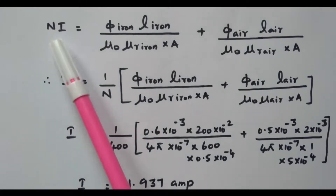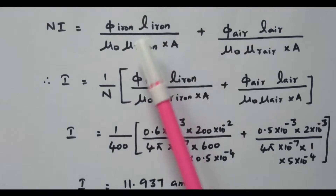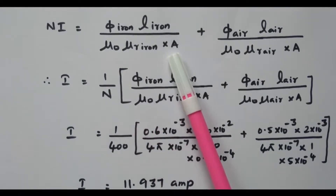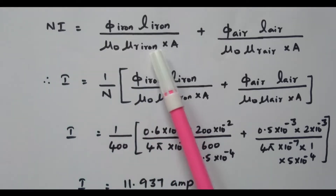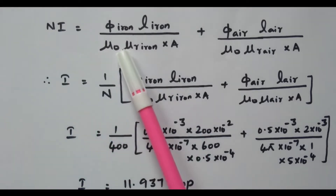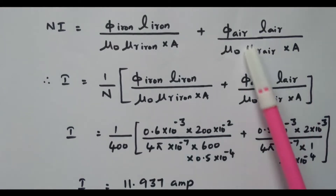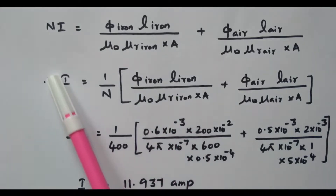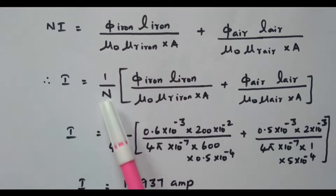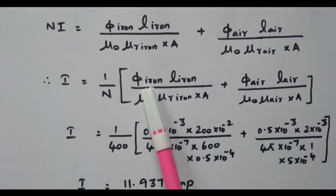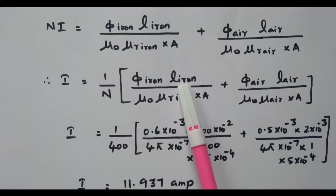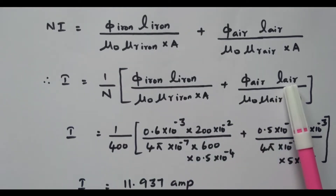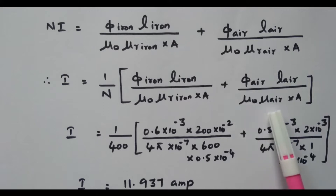The MMF formula: NI equals φ_iron times l_iron divided by μ₀ μr_iron times A, plus φ_air times l_air divided by μ₀ μr_air times A. Since we need only the current, we bring the number of turns N to the denominator: current I equals (1/N) times [φ_iron × l_iron / (μ₀ μr_iron × A)] plus [φ_air × l_air / (μ₀ μr_air × A)].